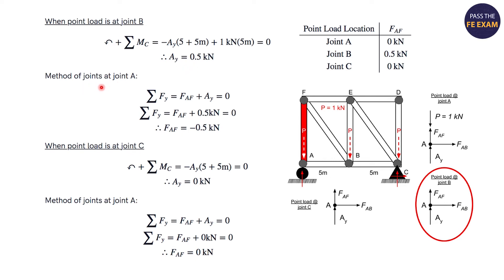So your AY that you solve is 0.5 kilonewtons. Then you use the method of joints at joint A again, and you do your arithmetic, and you find that the force of AF equals 0.5 kilonewtons. Negative is denominating the direction of it, but the force itself is 0.5 kilonewtons.